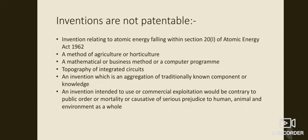Moving to the next slide: inventions which are not patentable. First: invention relating to atomic energy falling within Section 21 of the Atomic Energy Act of 1962 — atomic energy related inventions in the defense sector cannot be given patent rights. Second: a method of agriculture or horticulture — methods related to agriculture, floriculture or vegetable cultivation cannot be patented, because they should be practiced by other persons for the sustainability of the earth.